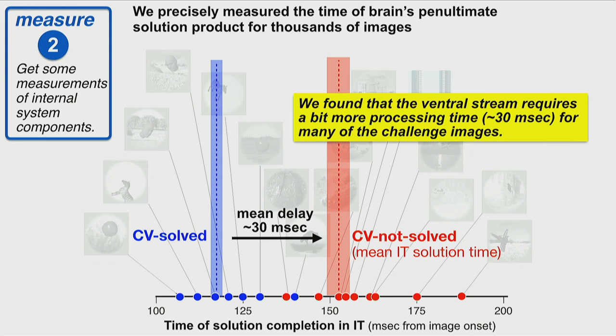This 30-millisecond mean delay is happening while we're only showing the image for 100 milliseconds. Human dwell times are around 200 milliseconds at each location. Usually when people think about recurrent processing they think at much longer timescales involving overt eye movements or attention. This is probably very subconscious — your system is actually requiring a little more time to execute on these images.